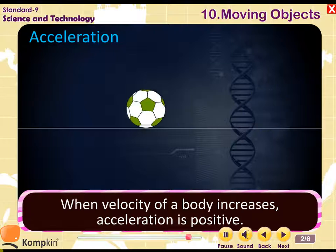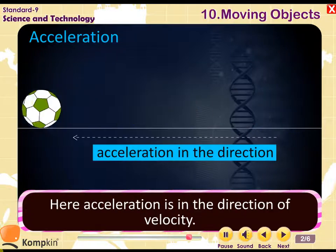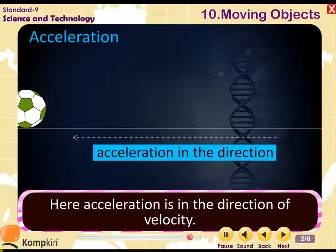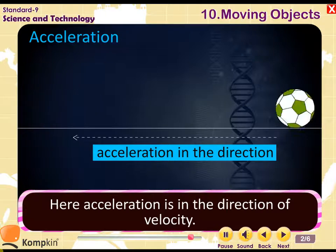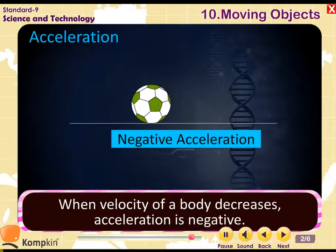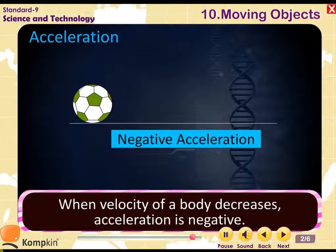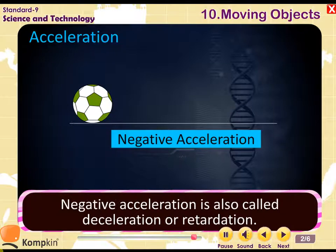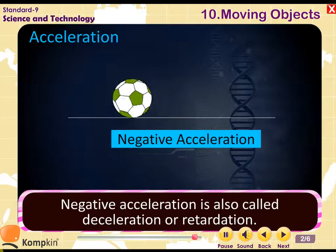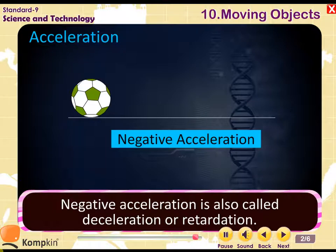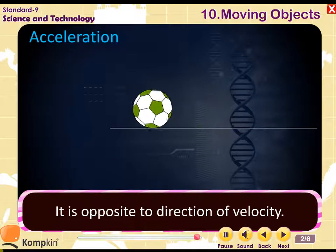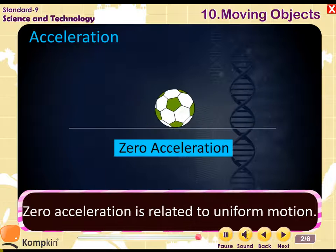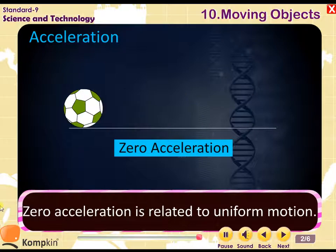When velocity of a body increases, acceleration is positive. Here, acceleration is in the direction of velocity. When velocity of a body decreases, acceleration is negative. Negative acceleration is also called deceleration or retardation. It is opposite to direction of velocity.